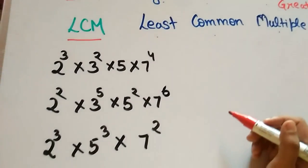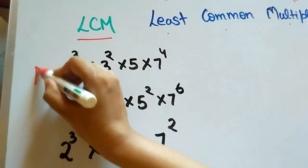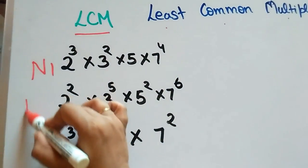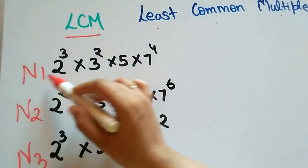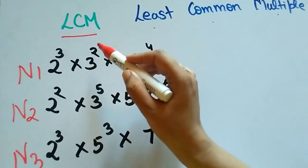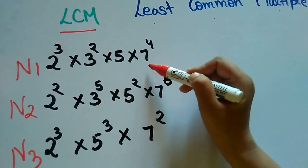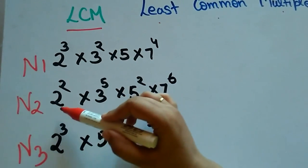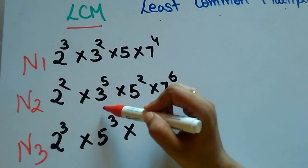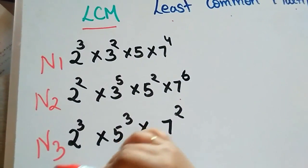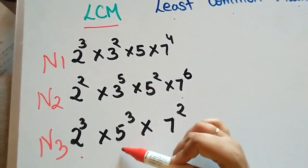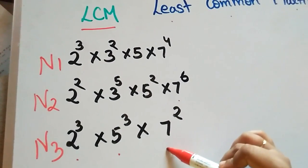Let's see an example. If we have three numbers: N1, N2, and N3. N1 is 2^3 × 3^2 × 5 × 7^4. N2 is 2^2 × 3^5 × 5^2 × 7^6. And N3 is 2^3 × 5^3 × 7^2.